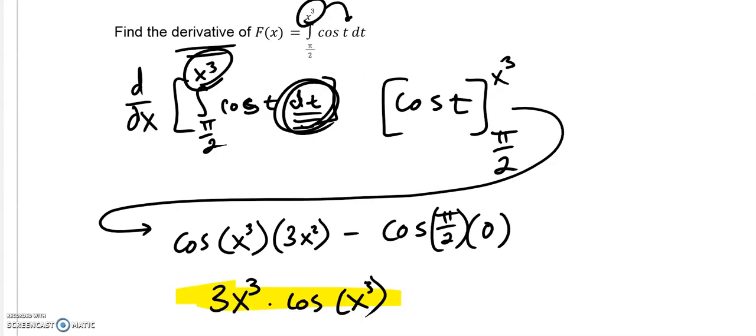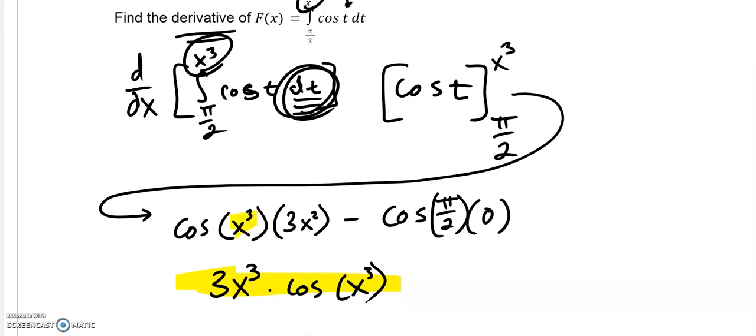So, when we go ahead and do that, we're going to plug x to the third in, and multiply by the derivative of x to the third, because we're changing the variable, and you have to account for that. And then you would plug in pi over 2 times the derivative of pi over 2, which doesn't have a variable in it, so it just becomes 0. And then when you simplify it, you get 3x to the third times cosine of x squared.